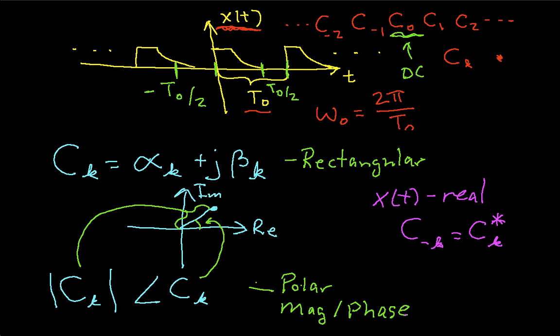In other words, c of minus k is the same as c of k, or c sub k, except that the sign of the imaginary part is opposite.